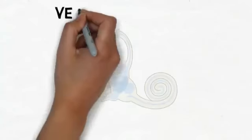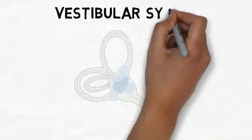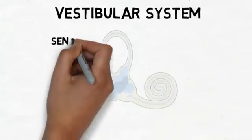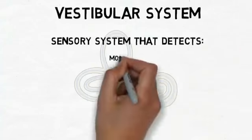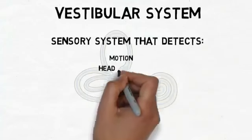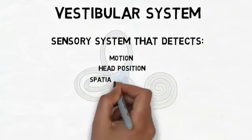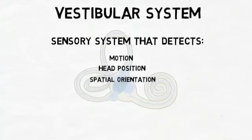The vestibular system is a sensory system responsible for providing our brain with information about motion, head position, and spatial orientation. It is also involved with motor functions that allow us to keep our balance, stabilize our head and body during movement, and maintain posture.